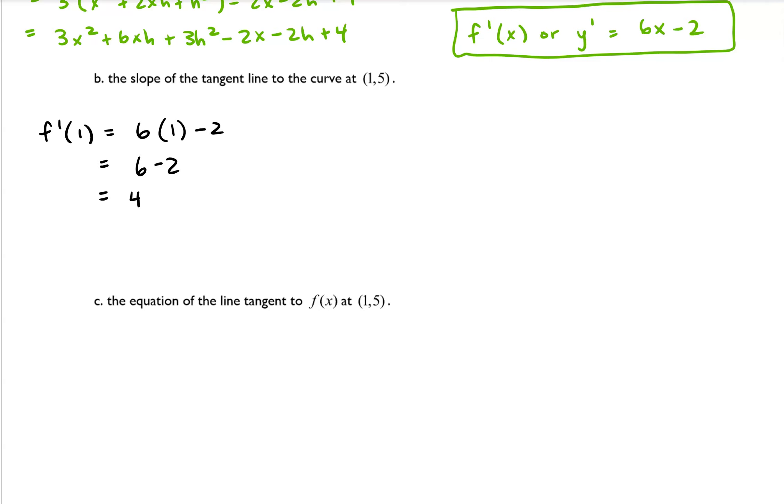So we get 6 minus 2, which equals 4. That means that our slope is equal to 4 when x equals 1, and so that's basically it. The slope of the tangent line at the point (1,5) is 4.